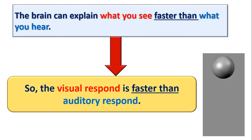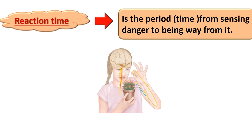What is faster? Visual response. Can you remember what is the meaning of reaction time? It is the time the organism takes to react to different stimuli — the time you take from sensing a danger to being away from it. Like when you're touching a cactus plant, you feel danger and move your hand away. The time you take is called reaction time.